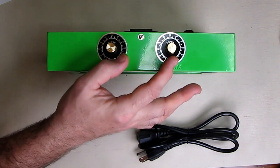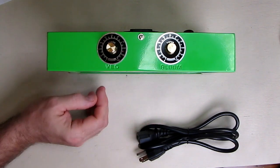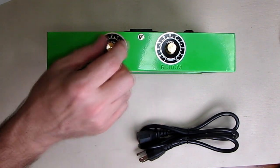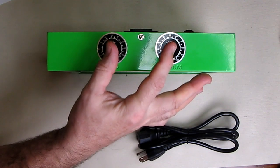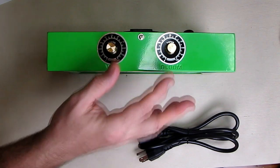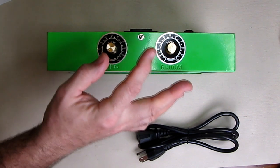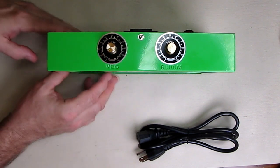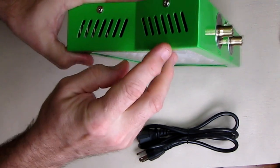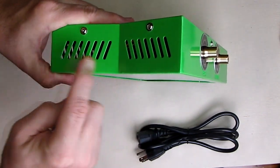The fan also inside here is variable speed depending on the requirements of how much is needed so it will use minimal amount of power to keep this unit cool. It also has very large heat sinks inside here that provide some of the dissipation of the heat.